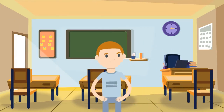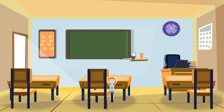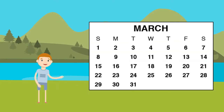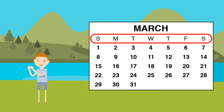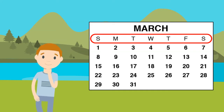Let's now look at the month of March to learn more about days and weeks. This calendar shows the month of March. There are letters that run across the top of this calendar. They show the days of the week. Do you know the days of the week?